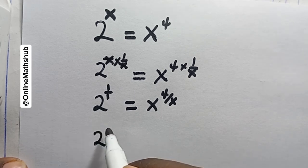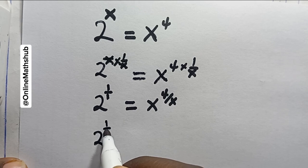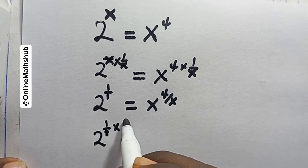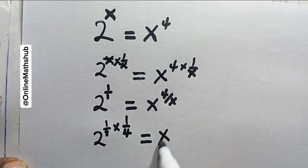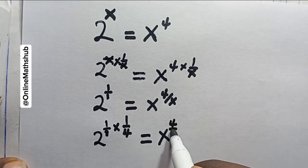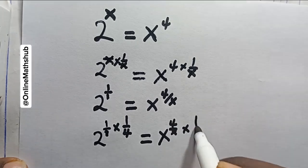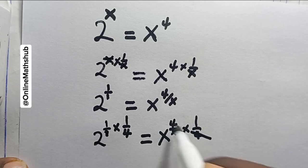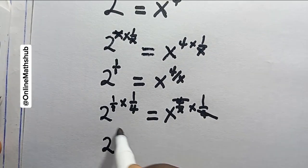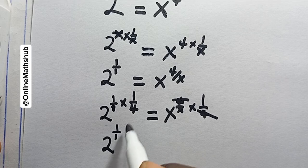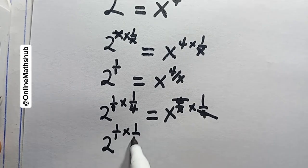So that this 4 can actually cancel this. What I'm left with is 2 power 1 over 1 multiplied by 1 over 4, multiplied by 1 over 4, is equal to x power 1 over x.